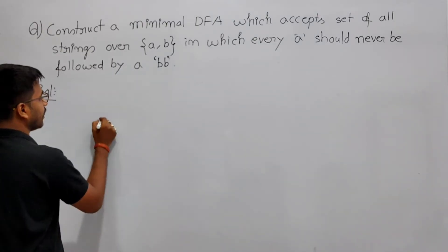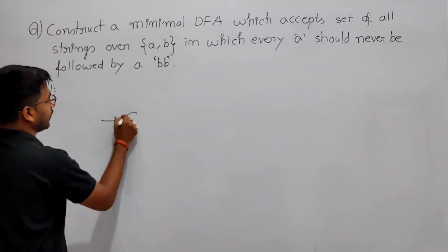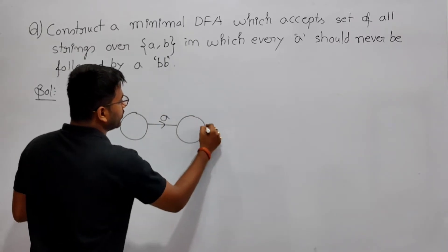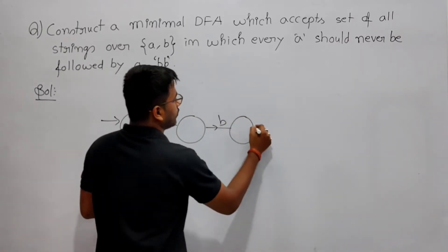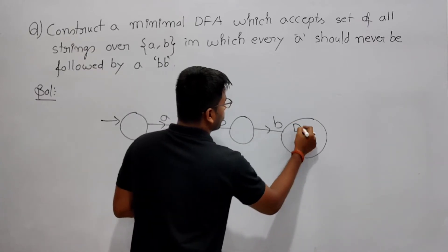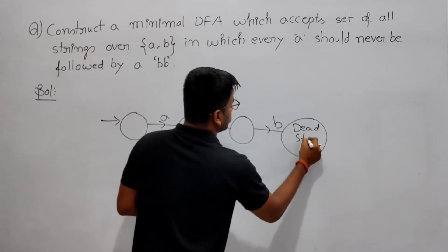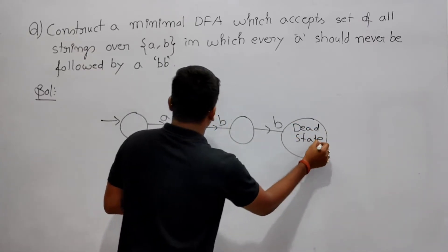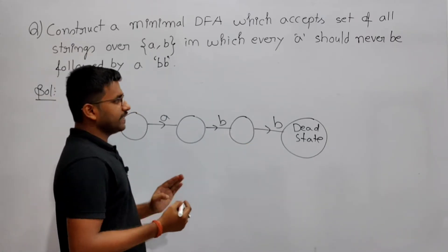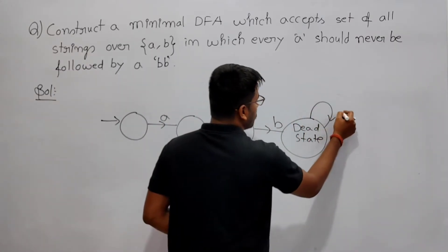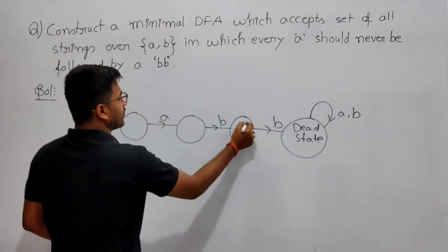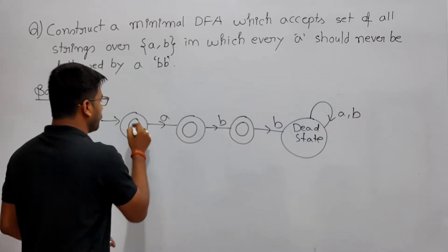After 'a', if you are getting two b's, reject it — go into a dead state. After it has two b's, go into the dead state and reject it. After that, if you are getting any combination of 'a' or 'b', stay there. The rest of the states are made final states.